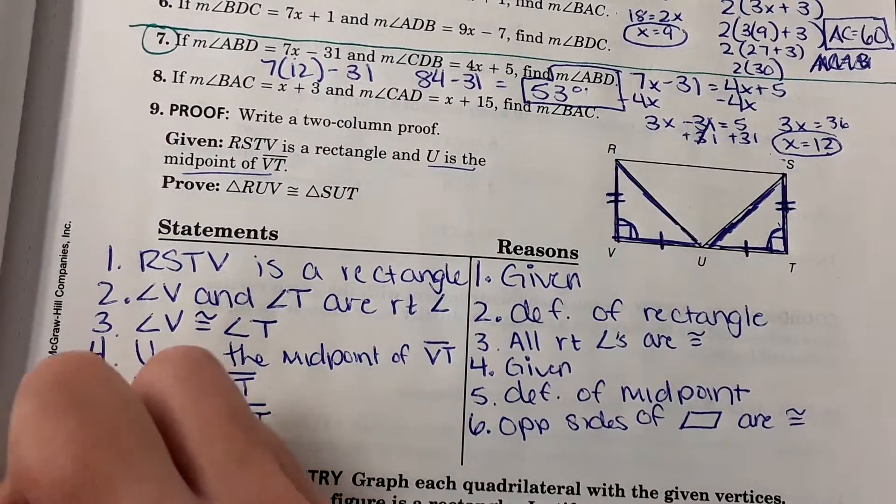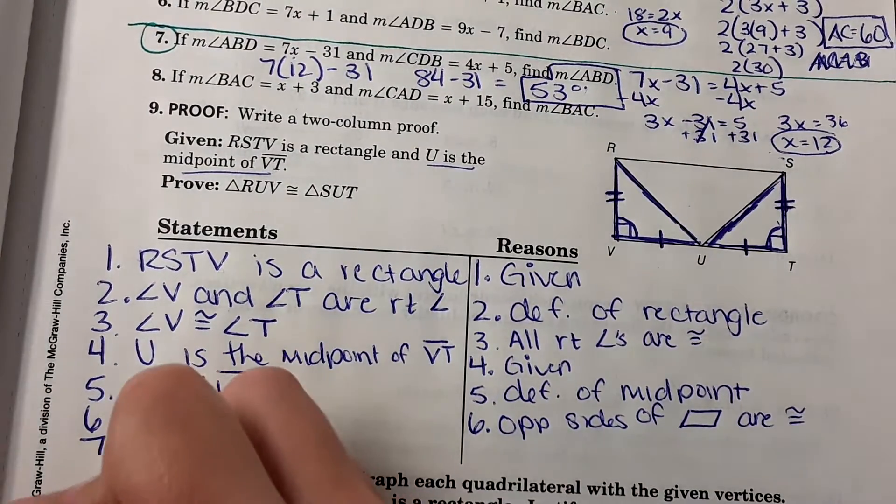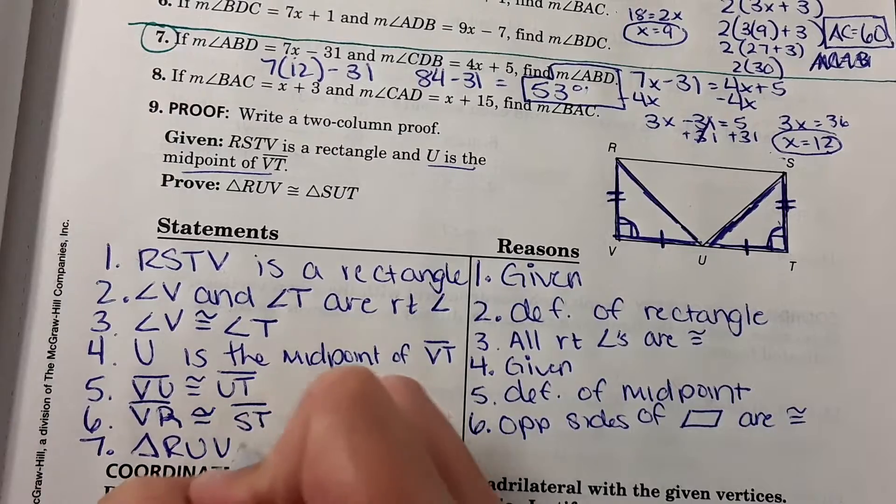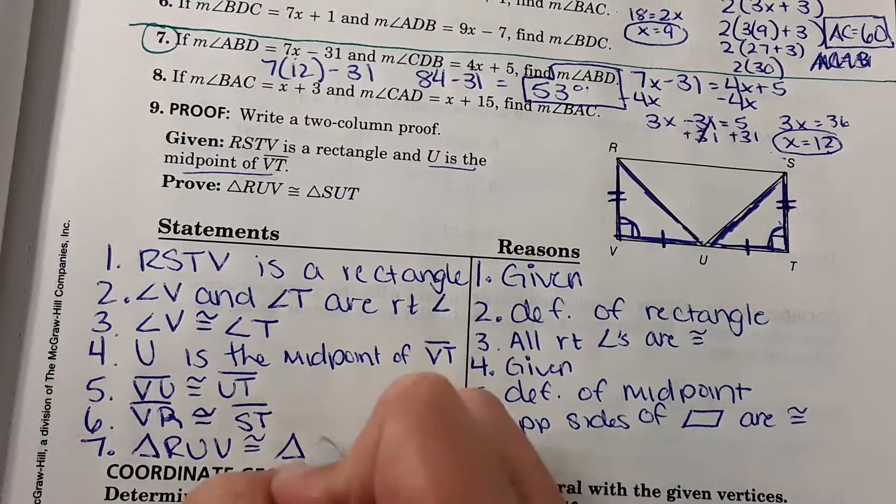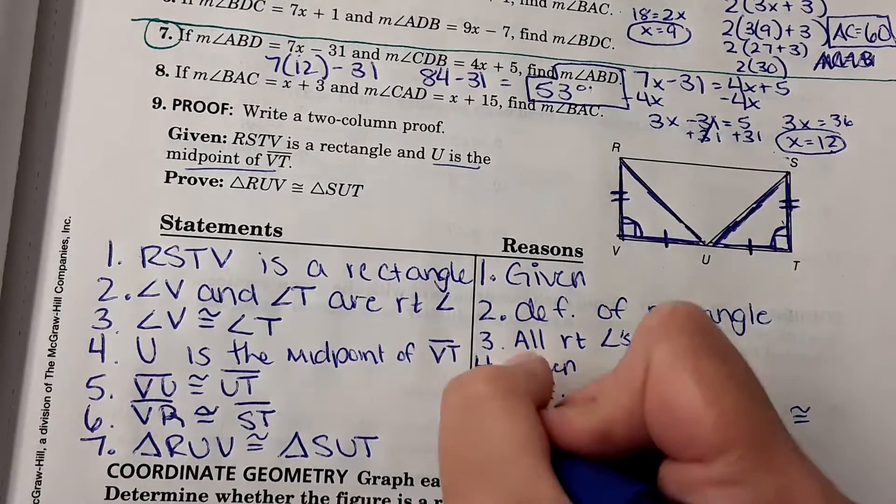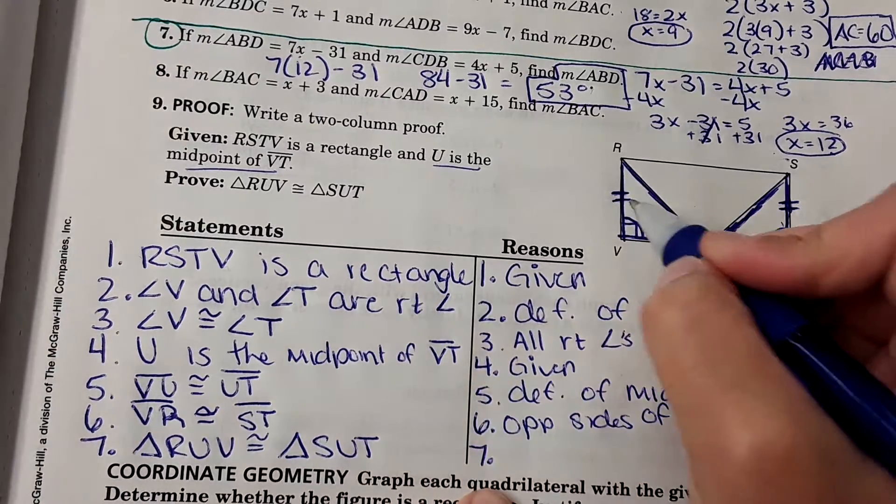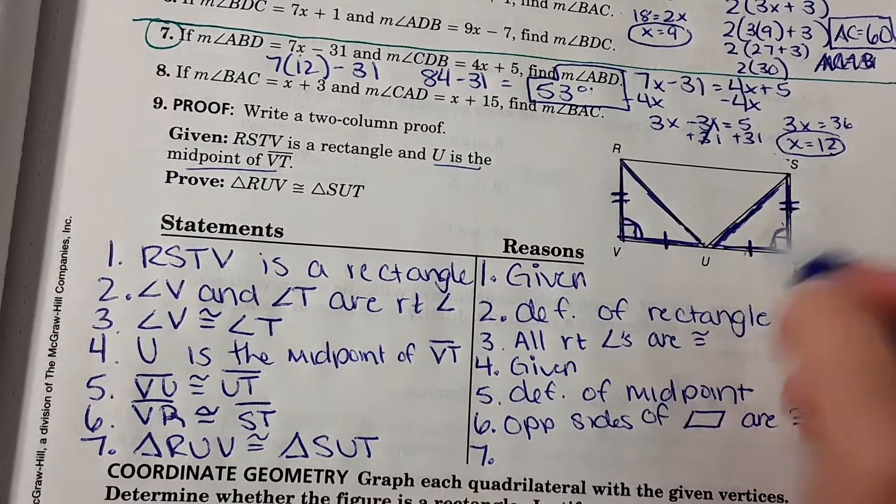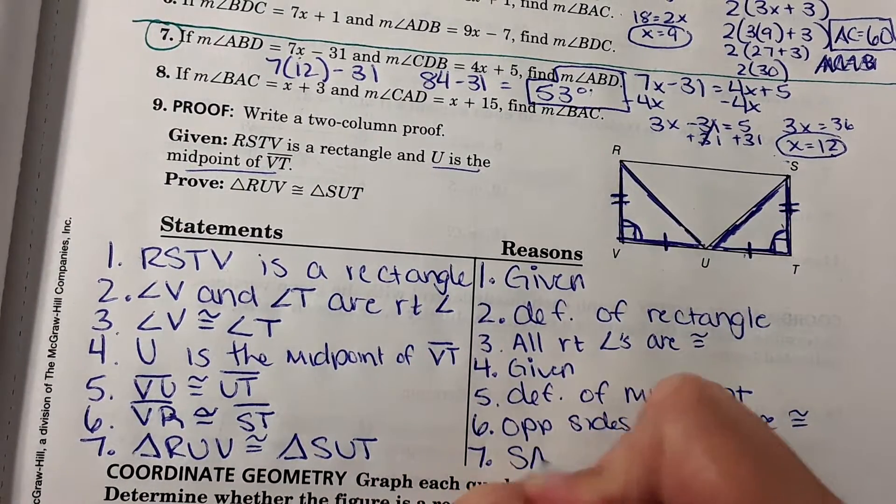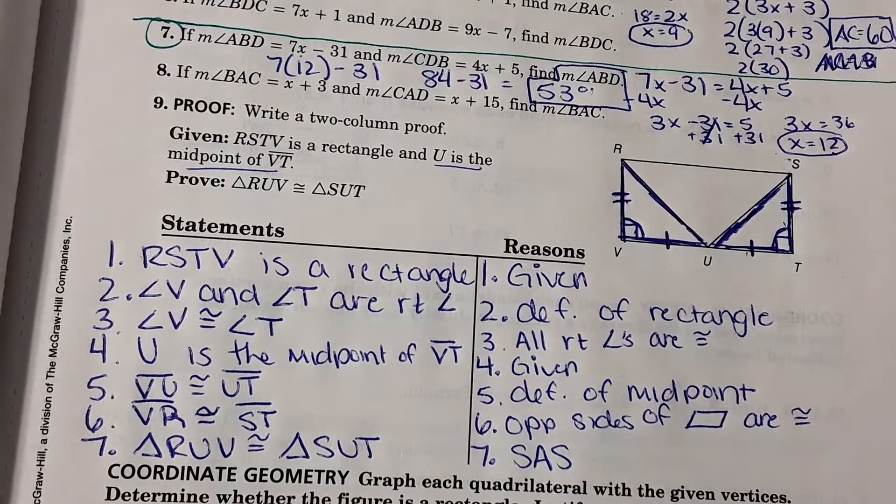And the last step. We can say that triangle RUV is congruent to triangle SUT because of side, angle, side. Side, angle, side. So they have side, angle, side congruence.